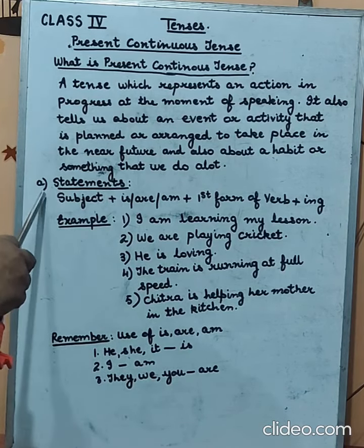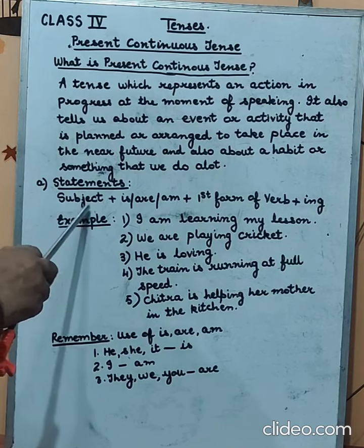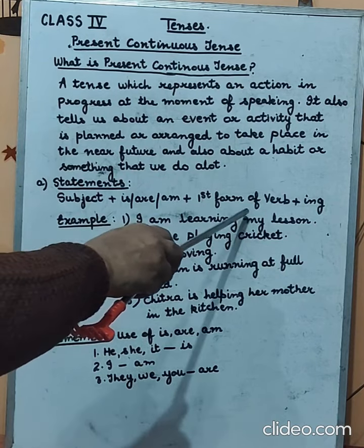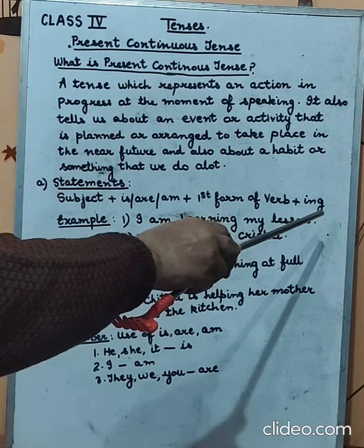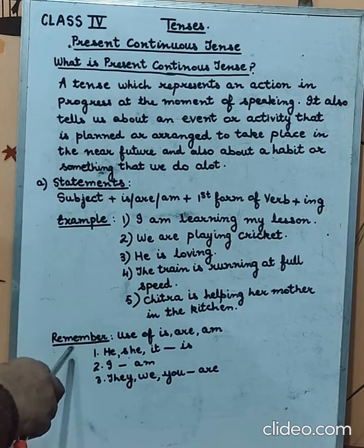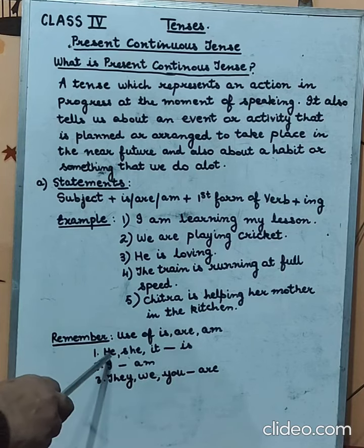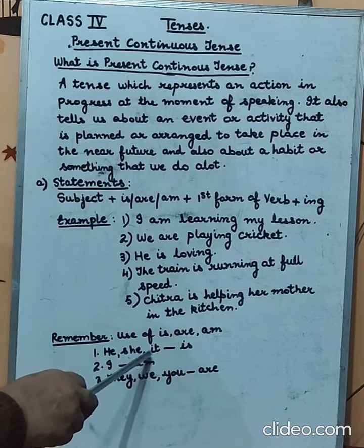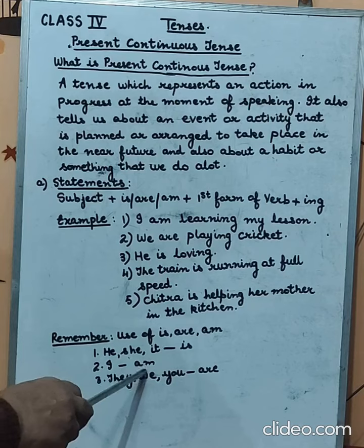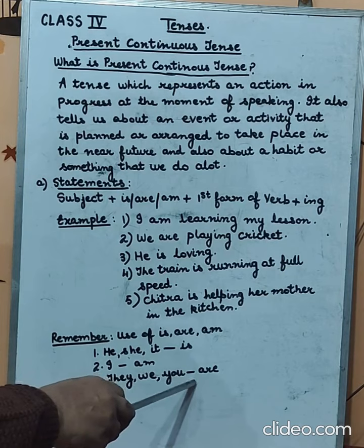In the first case statement, the formula is: subject plus is/am/are plus first form of verb plus -ing. Students, before looking at the examples, we should remember these things about the use of is, am, and are. When the subject is he, she, or it, we use 'is'. In case of 'I', we use 'am'. For they, we, or you, we use 'are'.